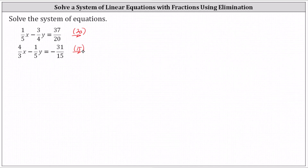Now let's go ahead and show each product. For the first equation, we multiply both sides by 20, giving us 20 times 1/5 x minus 20 times 3/4 y equals 20 times 37/20.